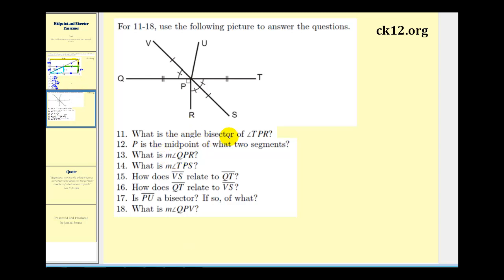The first question is, what is the angle bisector of angle TPR? Here's angle TPR. Notice the two adjacent angles that would make up angle TPR have one hash mark through them, and therefore angle RPS and angle SPT have the same measure and therefore are congruent, and so segment PS would have to be the angle bisector of angle TPR.